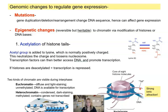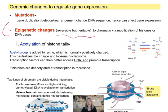And then we have epigenetic changes. These are changes that are going to be reversible but heritable. Two things happen here: we have acetylation of histone tails, and also DNA methylation.